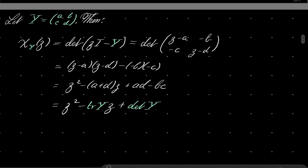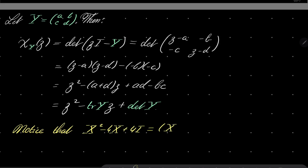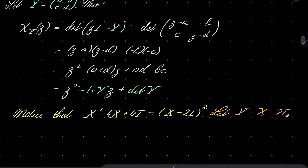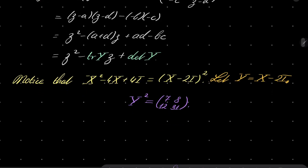Now let's go back to our equation. Notice that X squared minus 4X plus 4 times the identity matrix equals (X minus 2 times I) squared, because I commutes with any matrix X. So we make the substitution Y equal to X minus 2 times I, and we wish to solve Y squared equals [[7, 8], [12, 31]].